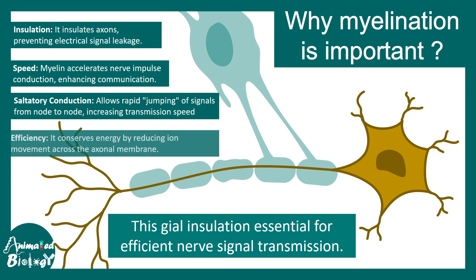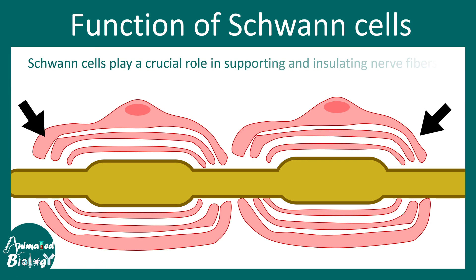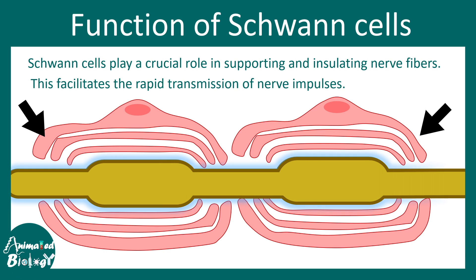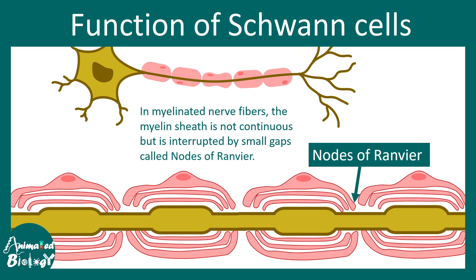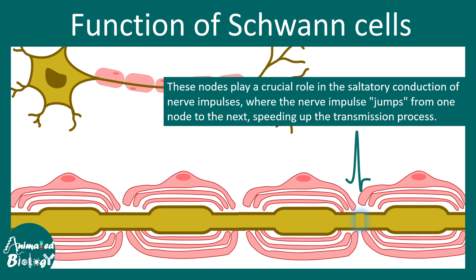Speed, saltatory conduction, and efficiency are mediated by myelination — performed by oligodendrocytes in the CNS and Schwann cells in the PNS. Saltatory conduction allows the action potential to jump from one node of Ranvier to another, greatly improving the speed of nerve impulse conduction.